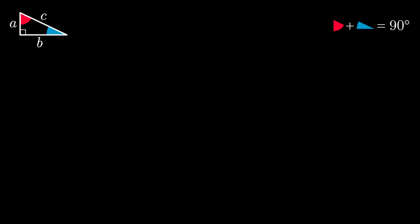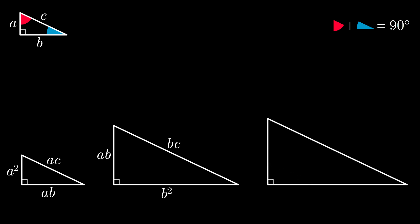Now create three different scaled versions of this triangle. One by multiplying all of its side lengths by A. Another by multiplying all of the original side lengths by B. And the last by multiplying all of the original side lengths by C.